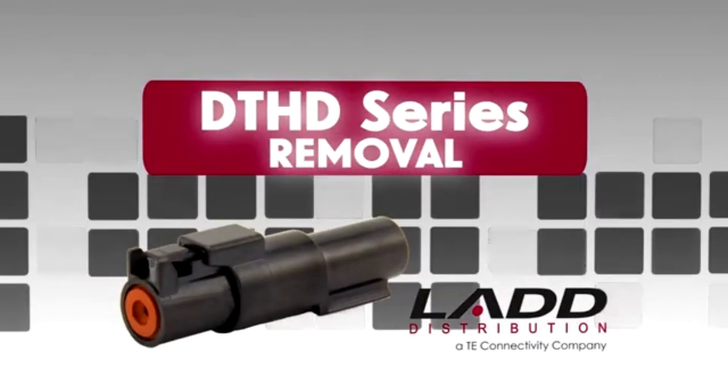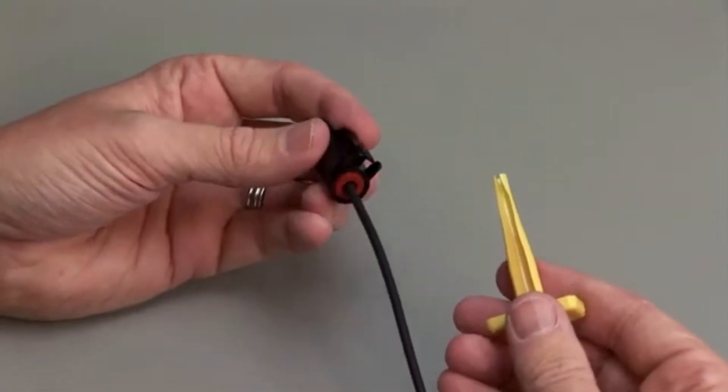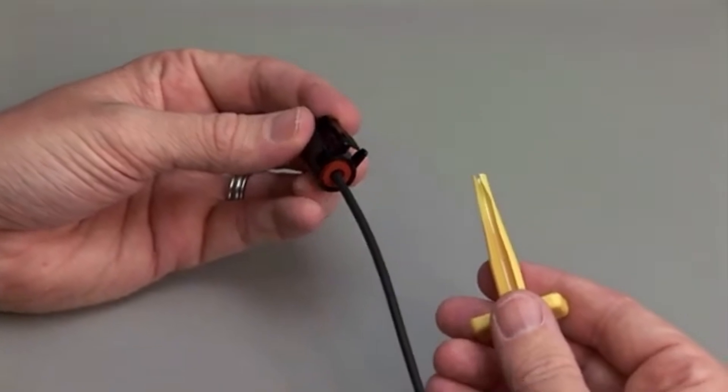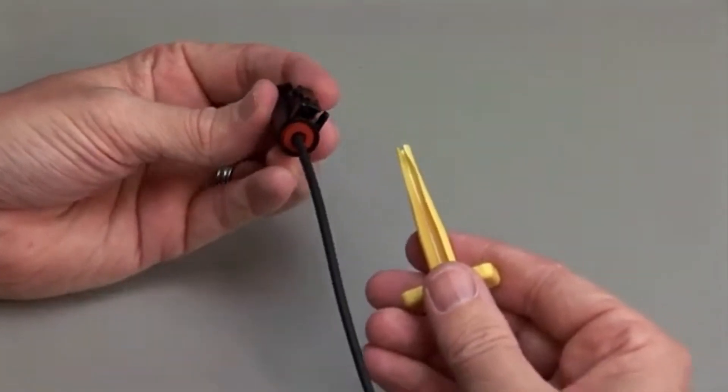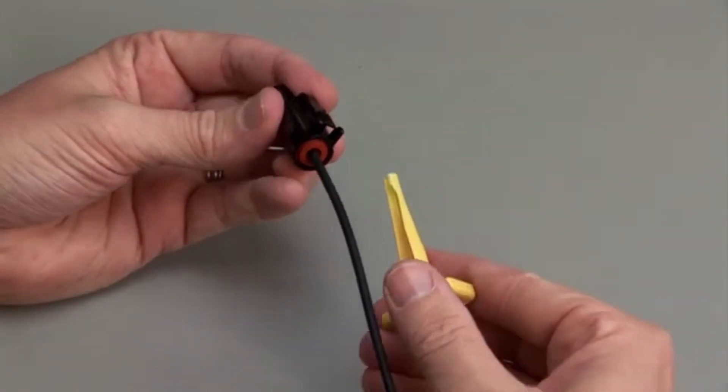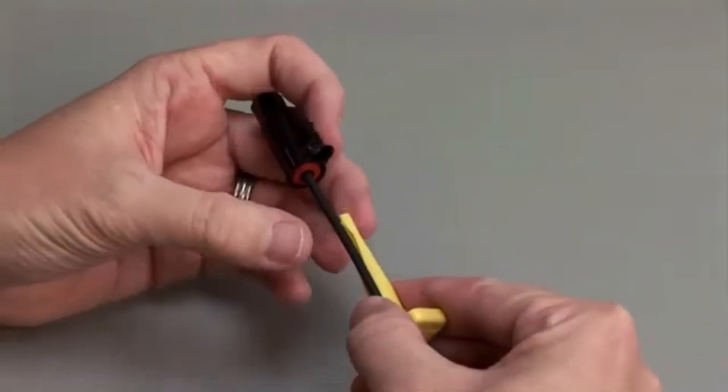DTHD Contact Removal. Hold the connector so the rear grommet is facing you. Using the correct size plastic removal tool, snap the tool over the wire so it will slide down the wire.